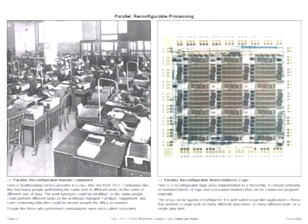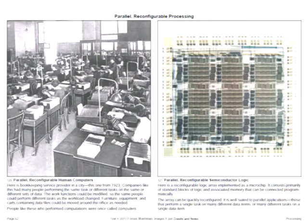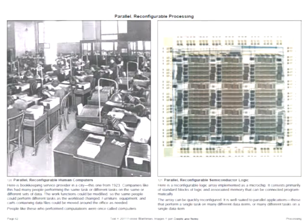Parallel reconfigurable processing is an old trick in cities. This photograph is from 1923 — a bookkeeping service company where each bookkeeper operates a calculator, possibly doing the same calculation on different data sets, or different calculations on the same data. The carts holding data files have wheels — everything is reconfigurable; you can shuffle chairs and desks around as needed. People who performed computations like this were once called computers. On the right is a microchip implementing an array of logic and memory that can be connected programmatically to perform any number of particular tasks.